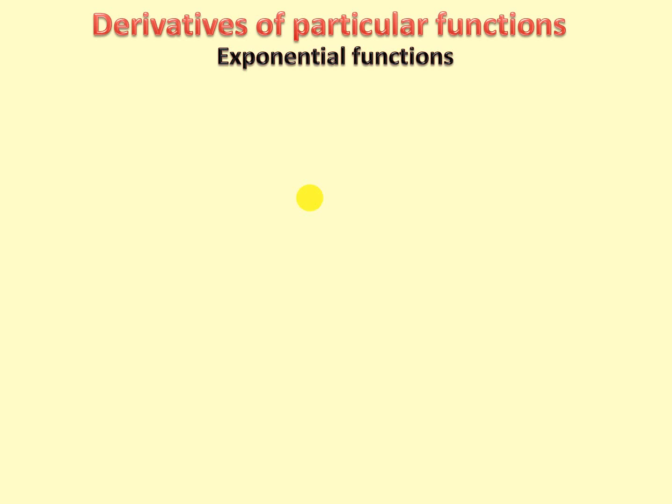We now look at the derivatives of exponential functions, just looking at e to the x. The derivative of e to the x is, in fact, e to the x. It's very interesting that e to the x is its own derivative — it's a very magical little number.